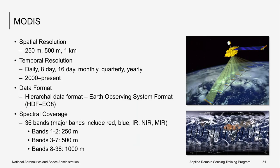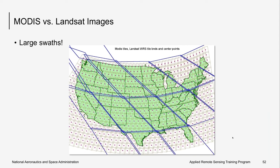MODIS is one of the key imaging instruments for NASA, designed to measure large-scale global dynamics across land, oceans, and atmospheres. It is flying on two satellites, Aqua and Terra, which capture imagery of the same area on Earth at different times of day. The Terra MODIS passes from north to south across the equator in the morning, and Aqua passes from south to north in the afternoon, allowing MODIS to observe any location at least once a day. One limitation of MODIS is its coarser spatial resolution. The figure shows an example of MODIS tiles, where the area covered by a MODIS image is much larger than the Landsat footprint — MODIS shown in blue and Landsat in the pinkish-brown areas.